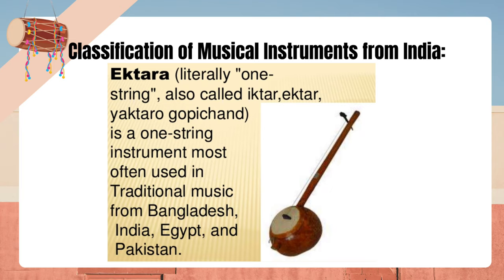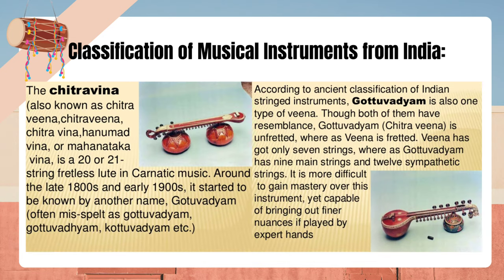Ektara, literally one string, is a one-string instrument most often used in traditional music from Bangladesh, India, Egypt and Pakistan. The Chitraveena, also known as Gotavadhyam, is a 20 or 21 string fretless lute in Carnatic music. Around the late 1800s and early 1900s it started to be known by another name — Gotavadhyam. According to ancient classification of Indian stringed instruments, Gotavadhyam is also one type of Veena. Chitraveena is unfretted whereas Veena is fretted. Veena has seven strings whereas Gotavadhyam has nine main strings and twelve sympathetic strings.